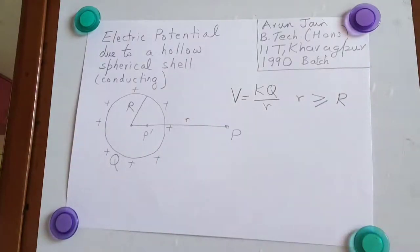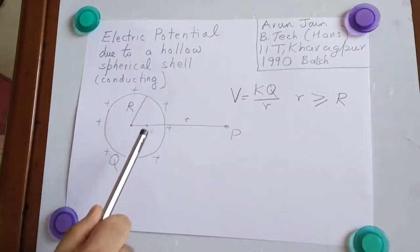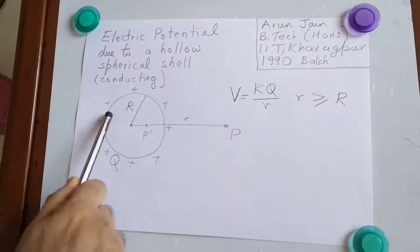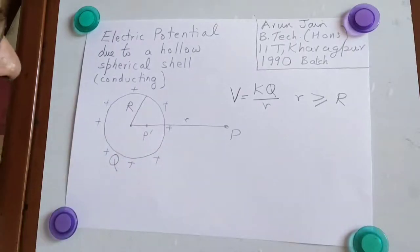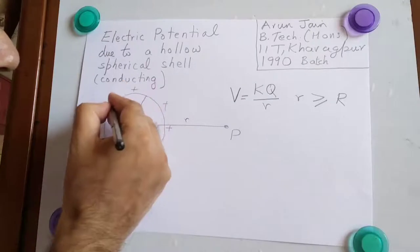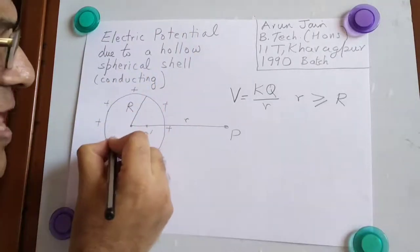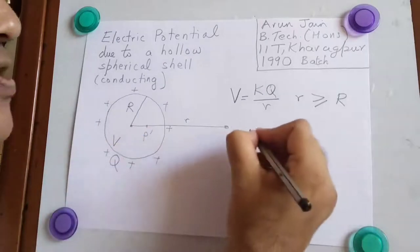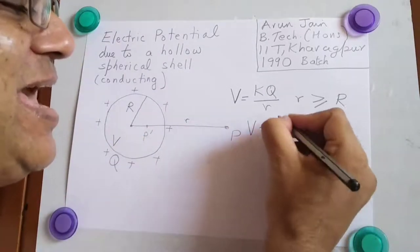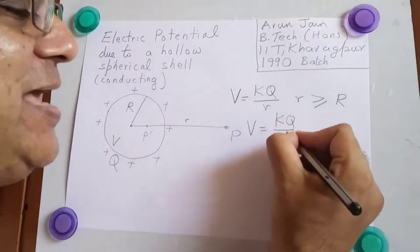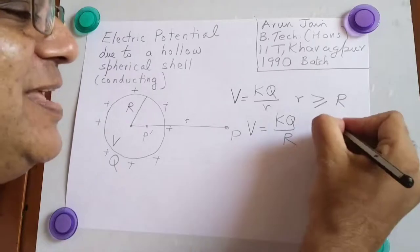When we come inside, the potential is same at every point. Because there is no force inside, no electric field inside, so this entire conductor inside becomes an equipotential. So V is equal to KQ by capital R for all points inside.